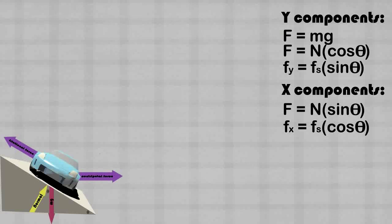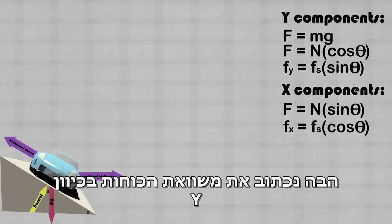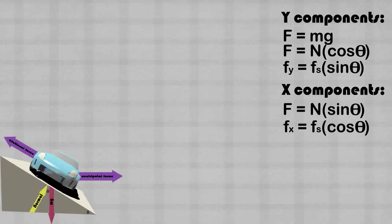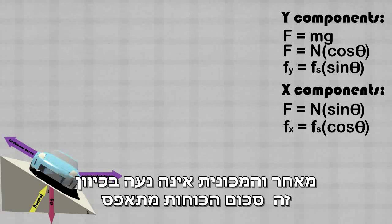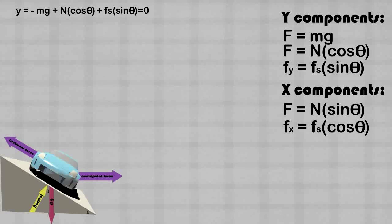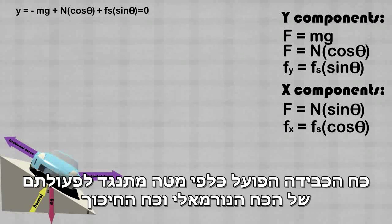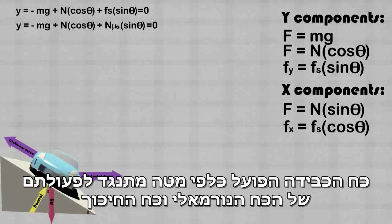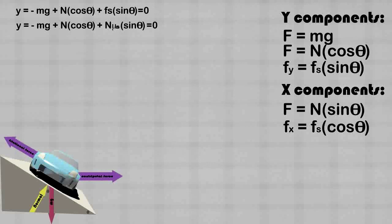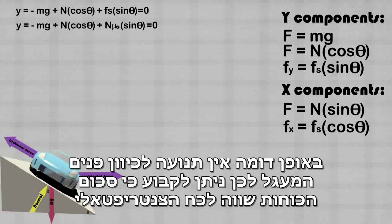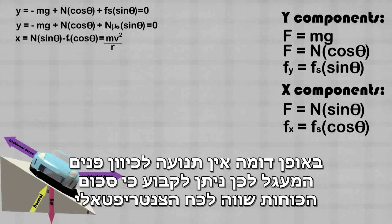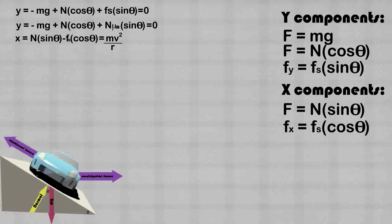Let's set up our equations involving y components. Since the car does not move in the y direction, the sum of the forces must be zero. The downward direction of gravity opposes the upward direction of the normal and frictional force. Similarly, there is no movement in the x direction, so we can set our x components equal to the centripetal force, mv squared over r.